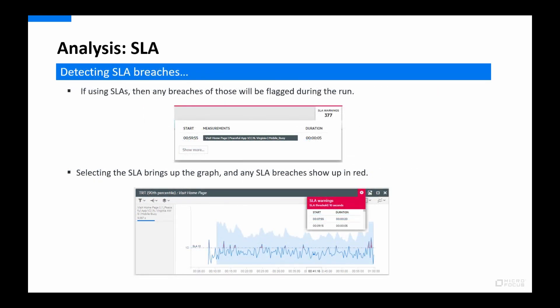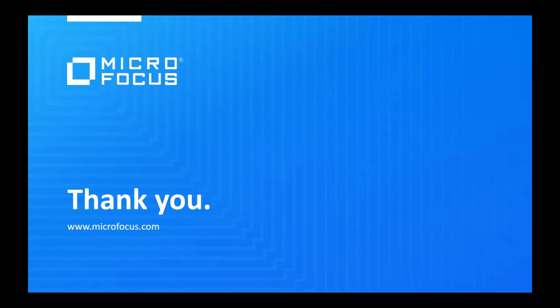Finally, if we have defined SLA values for our transactions in the test, they will also be detected and flagged up during the test if they are breached. Using SLAs is recommended because they provide quick feedback and an easy way to judge if a test was deemed successful or not — which can be of extra value if a test is part of a DevOps toolchain that runs automatically. In the graph, the dotted line shows the SLA set to 10 seconds, and the small red spikes are SLA breaches. It is also possible to set up a test so that if an SLA fails, the test automatically stops and is flagged as failed. And with that, we've come to the end of this presentation — thank you for your attendance and I hope this session was beneficial to you.